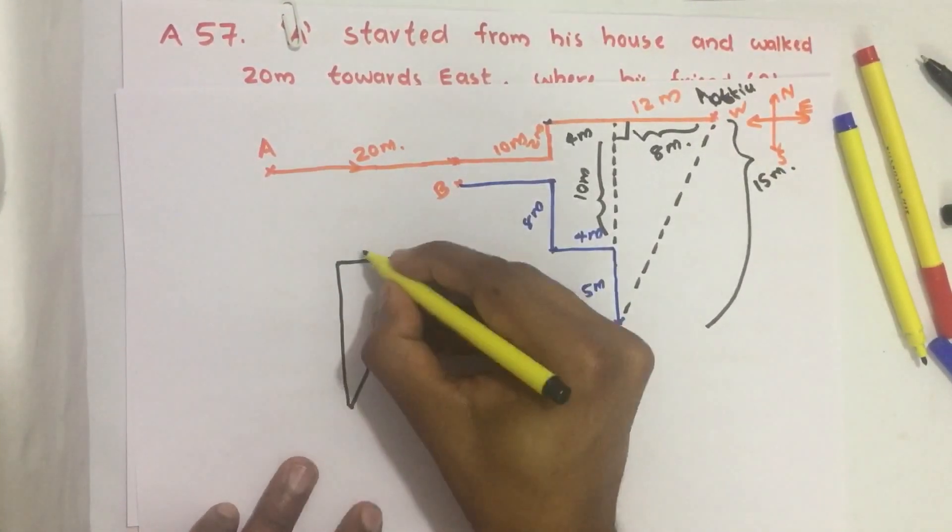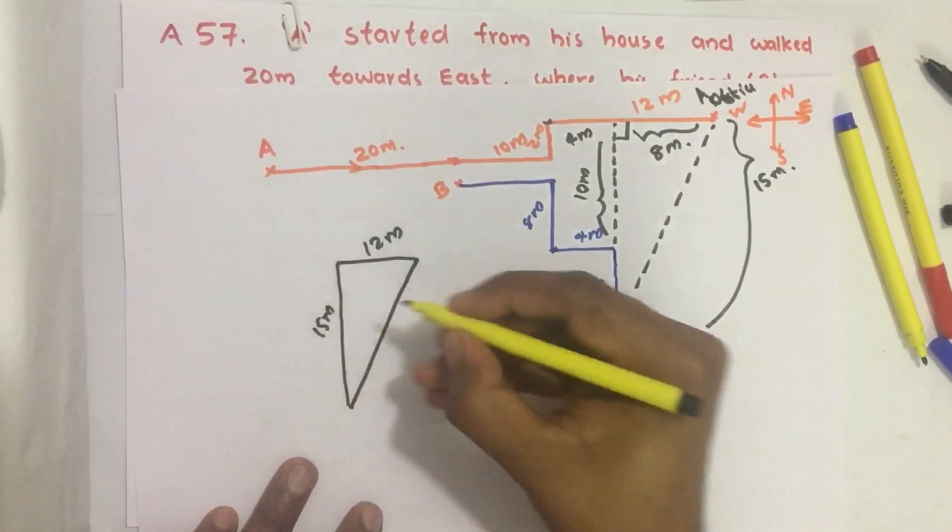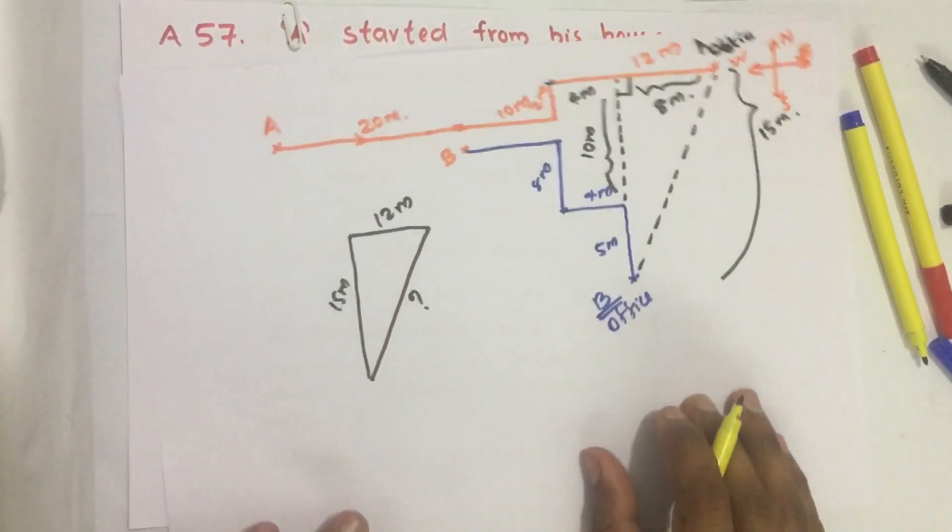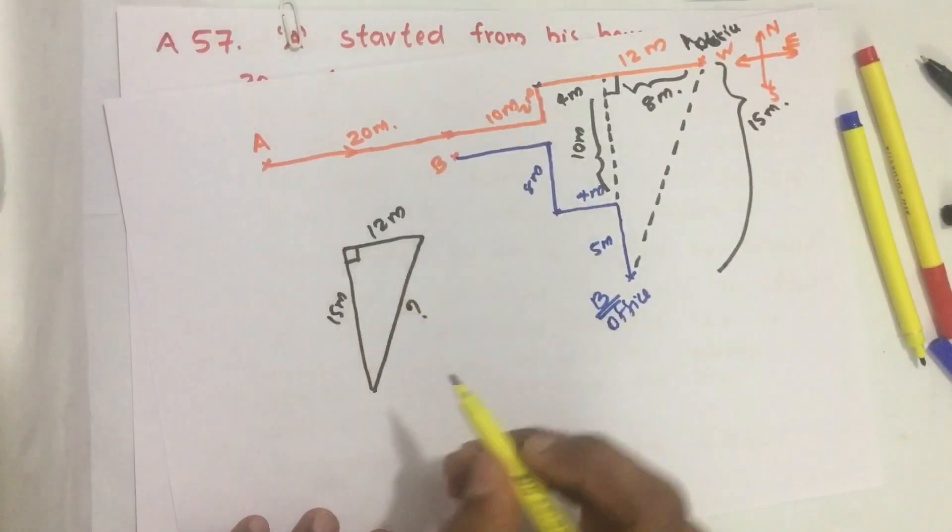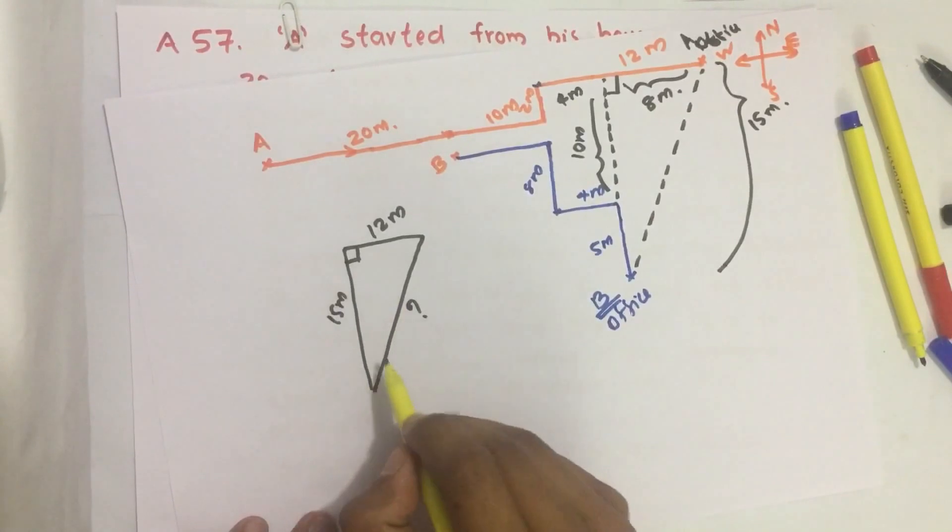Like this. And it is 12 meters. And this is 15 meters. We have to find this distance. We know how to find the longest hypotenuse of a right angled triangle by the Pythagorean theorem.